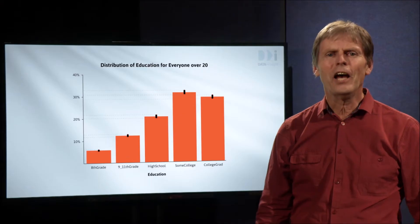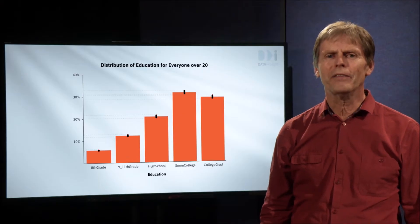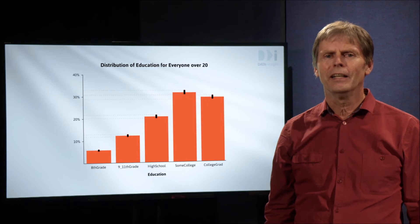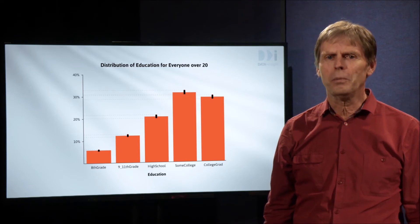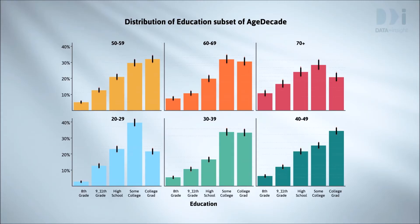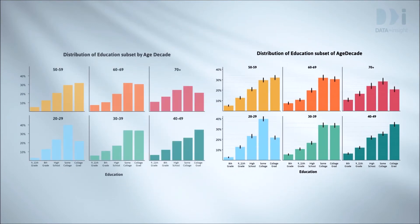Let's now look at some of the relationships we investigated in week 3, and see if the features we highlighted then can still be taken seriously once we take sampling error into account. We looked at separate graphs for the education outcomes for each decade of age. What were some of the main features we highlighted?